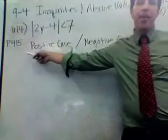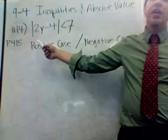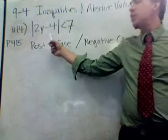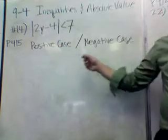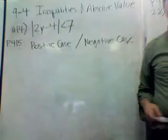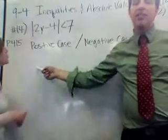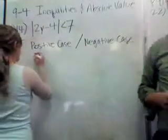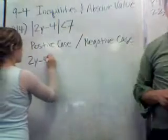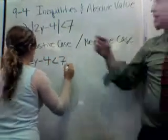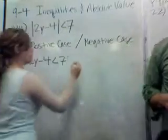We're on number 14 on page 415, and I can't stress enough that when you are dealing with absolute values, you have to have two cases: a positive case and a negative case. The positive case is easy — it's just like it is without the absolute value sign. So 2y minus 4 is less than 7, just as it appears, but you drop the absolute value markers.